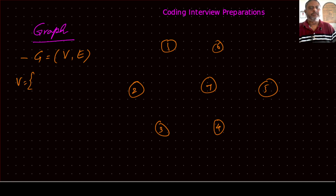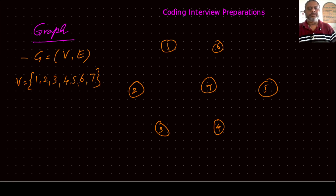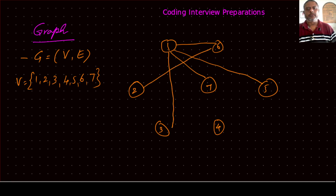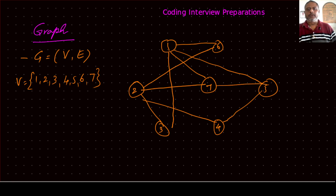The vertex set V consists of nodes 1, 2, 3, 4, 5, 6, and 7. We also have edges which are used to connect the vertices. That is the graph we have as an example.